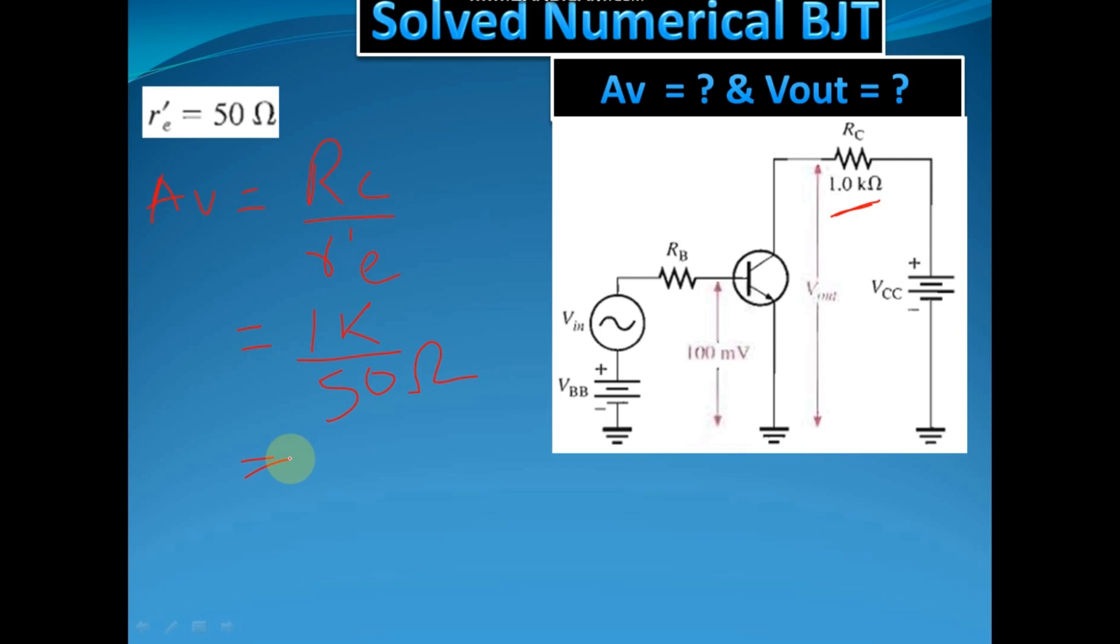So here your voltage gain is 20. So now you have got your voltage gain Av, and now easily you can calculate the output.